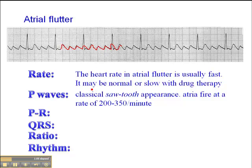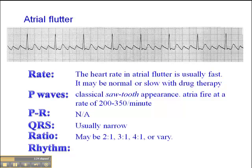When we're looking at ratios, we have to count that flutter wave that's not actually seen — it's buried there but it exists. The PR interval is not really applicable because we don't have normal P waves, and the QRS is usually narrow. The ratio in this particular example is 1, 2, 3, and the fourth one is buried — so that's a 4 to 1 ratio.